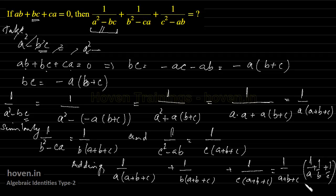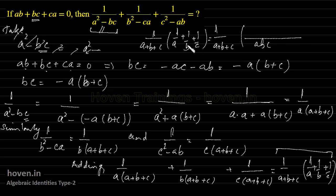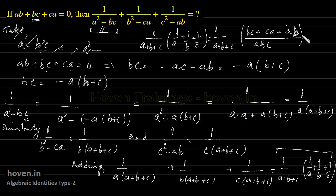Taking a plus b plus c common, we get 1 by a plus b plus c into 1 by a plus 1 by b plus 1 by c. Taking abc as the LCM for the bracket, the numerator becomes bc plus ca plus ab. But bc plus ca plus ab has been given as 0, so the numerator is 0. Zero by abc is 0, so the entire expression equals 0.